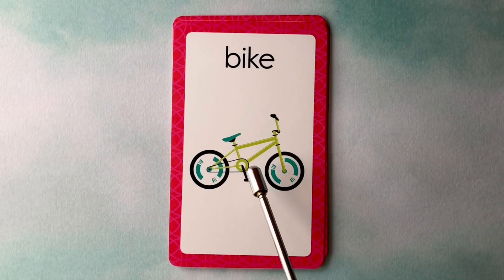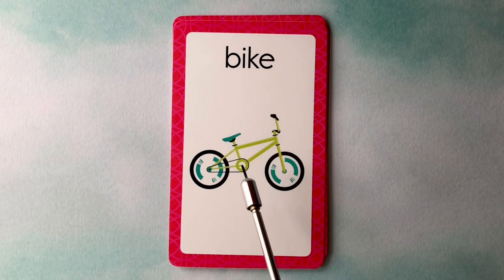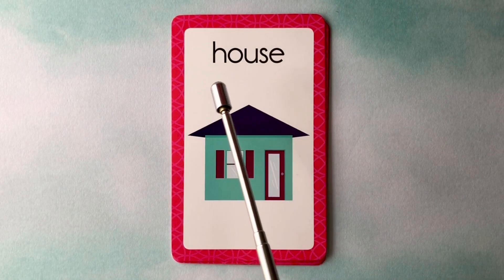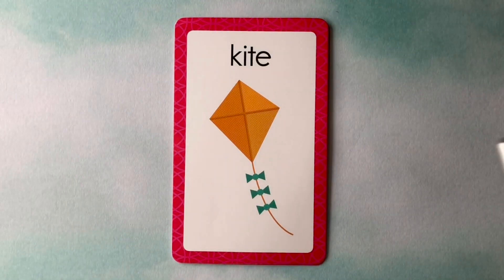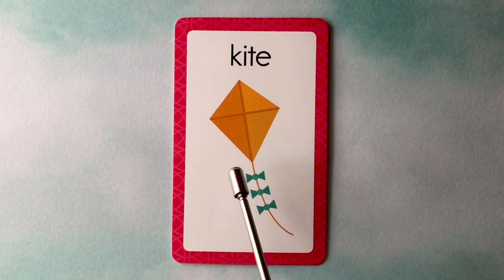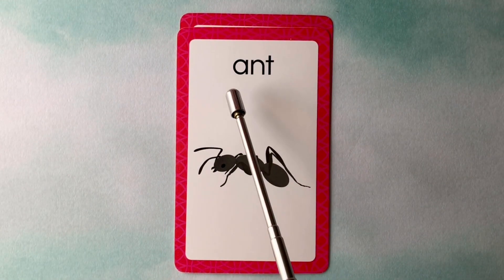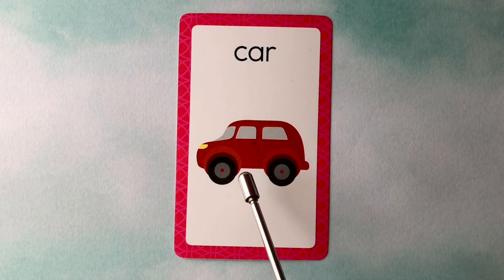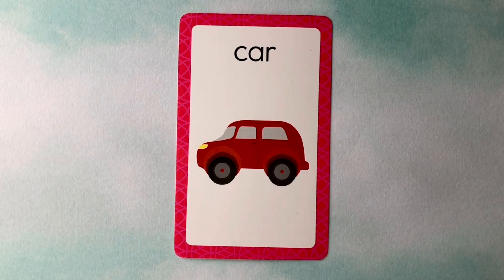This is a bike. B-I-K-E. Bike. This is a house. H-O-U-S-E. House. This is a kite. K-I-T-E. Kite. This is an ant. A-N-T. Ant. This is a car. C-A-R. Car. Nicely done.